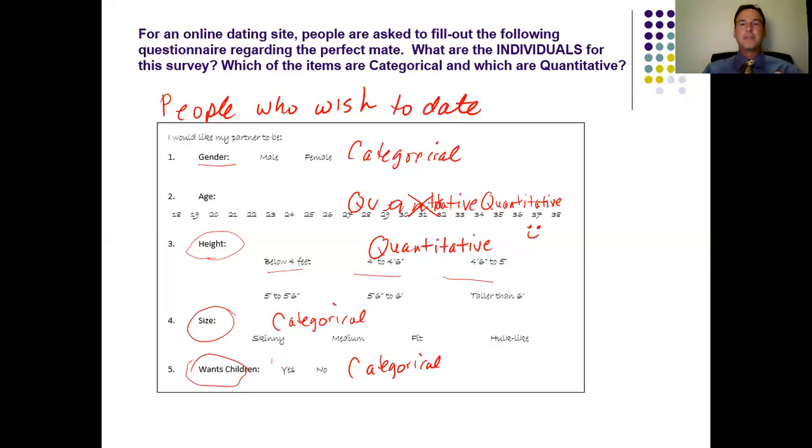All right. So again, some things that we talked about. First, we talked about individuals. I'm going to highlight this up here. Those are people or things that you are studying. Then we have our variables. These are all our variables. These are how we are describing our individuals. And then again, you can decide whether these are categorical or quantitative.